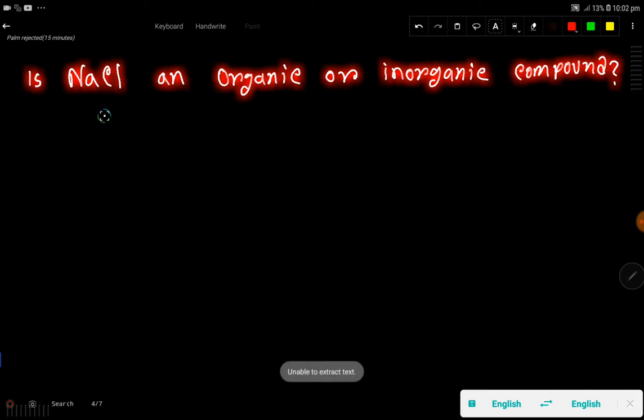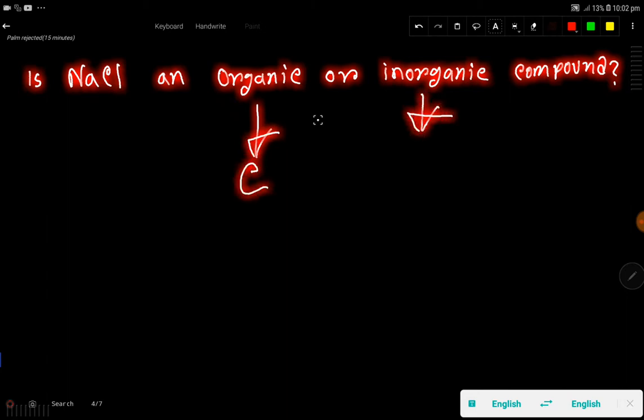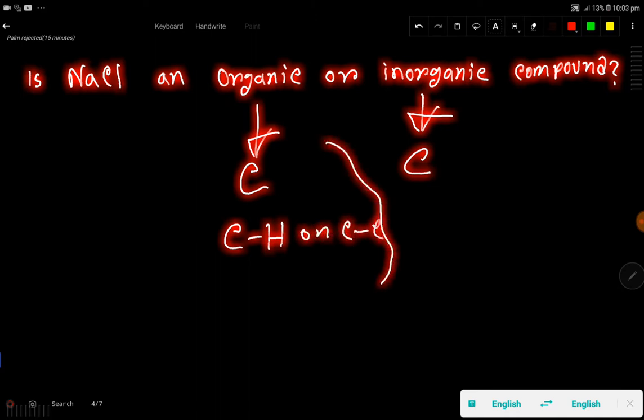In organic chemistry we have carbon, but in inorganic compounds we may or may not have carbon. In organic compounds we'll get carbon-hydrogen bonds or carbon-carbon bonds, but in inorganic compounds we won't get any carbon-hydrogen bond or carbon-carbon bond.